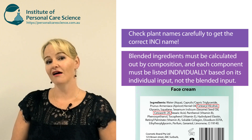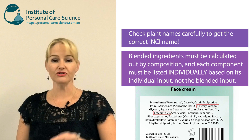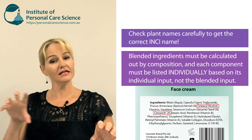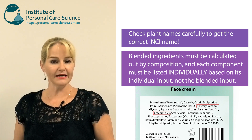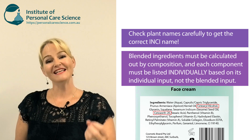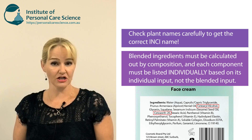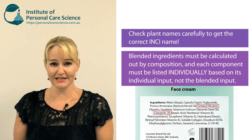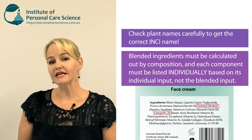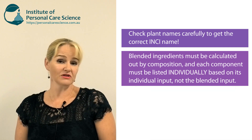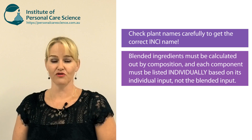You instead need to calculate the individual portions of cetearyl alcohol and ceteareth-20 and list them separately depending on the exact amount that each material is actually present. This also applies for any extracts, actives, or other blended materials you may be using in your formulas.